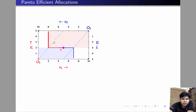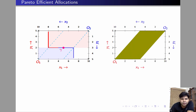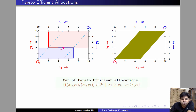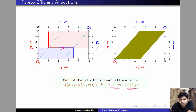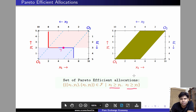This reasoning holds for any allocation lying in this shaded region. Therefore, any allocation lying in this region is efficient. The set of efficient allocations are all allocations in the Edgeworth box satisfying the property that x1 is greater than or equal to y1 — meaning the allocation lies below the 45-degree line through the origin of individual 1 — and x2 is greater than or equal to y2 — meaning the allocation lies above the 45-degree line through the origin of individual 2. Together these two conditions give us this colored region.